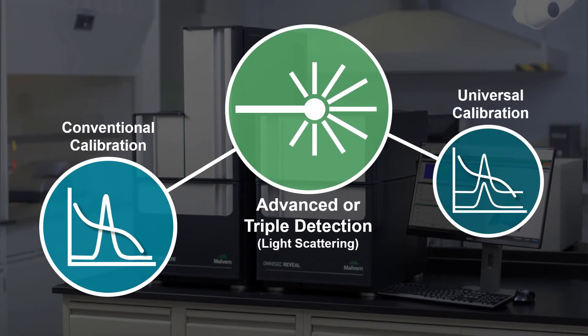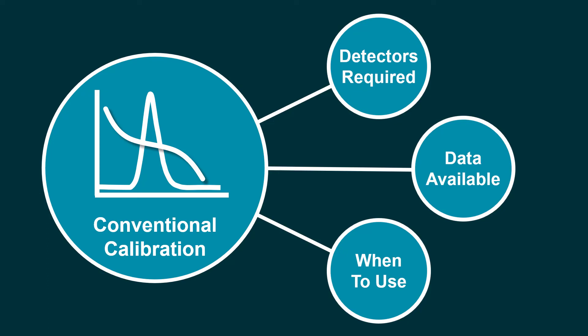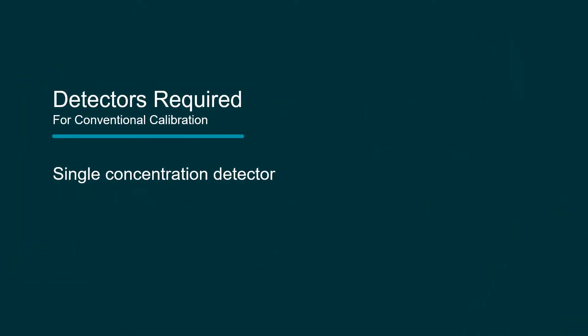Last, we'll look at conventional calibration. Conventional calibration is the simplest analysis method, and as such, it utilizes a single concentration detector.